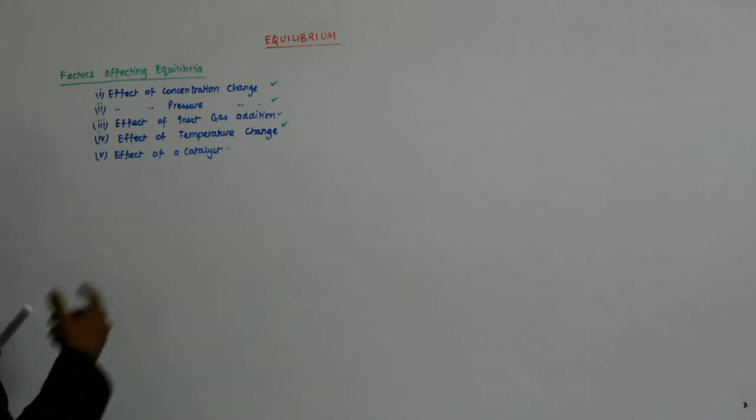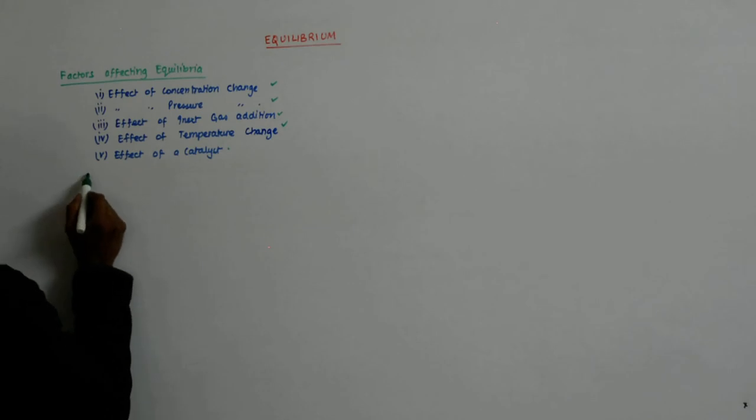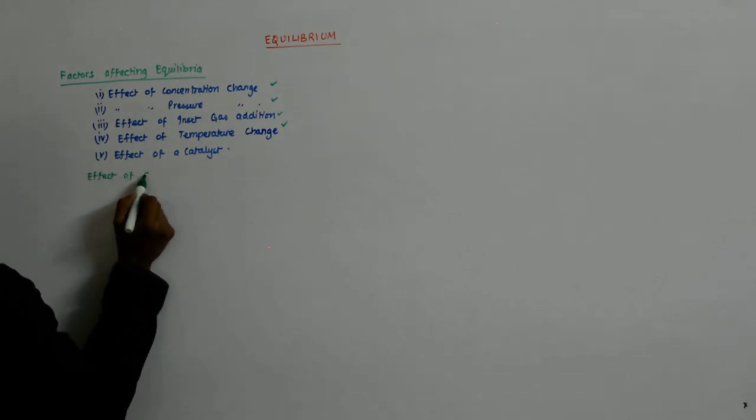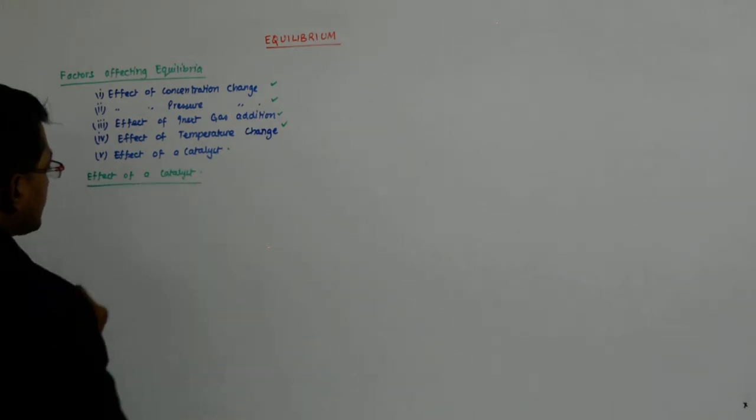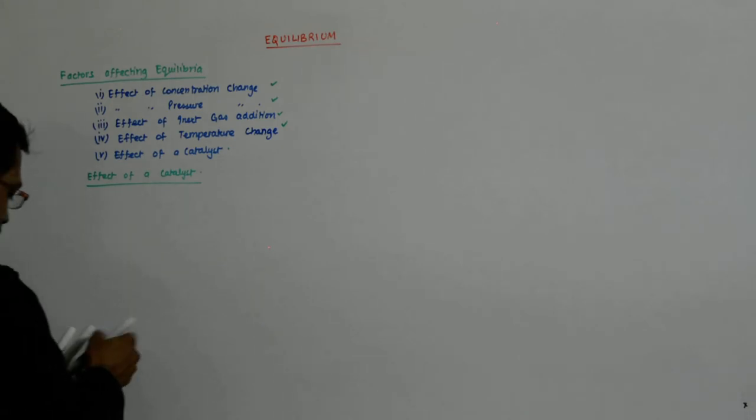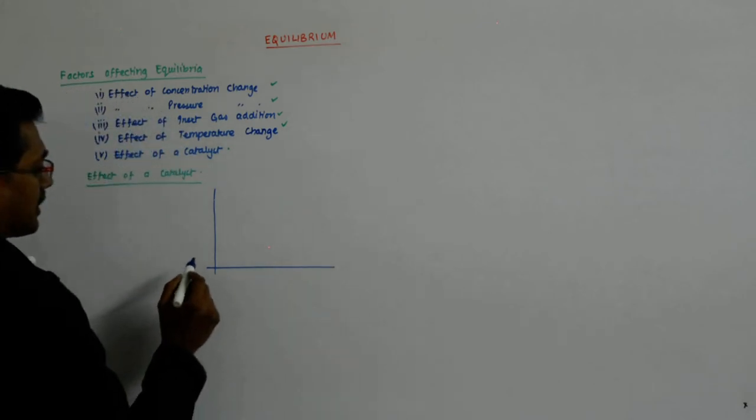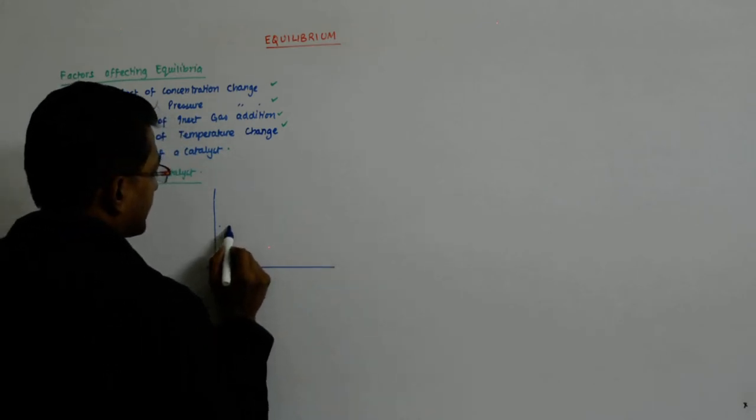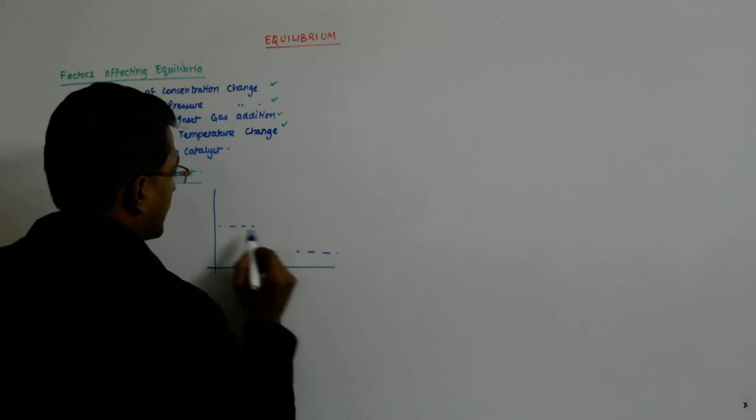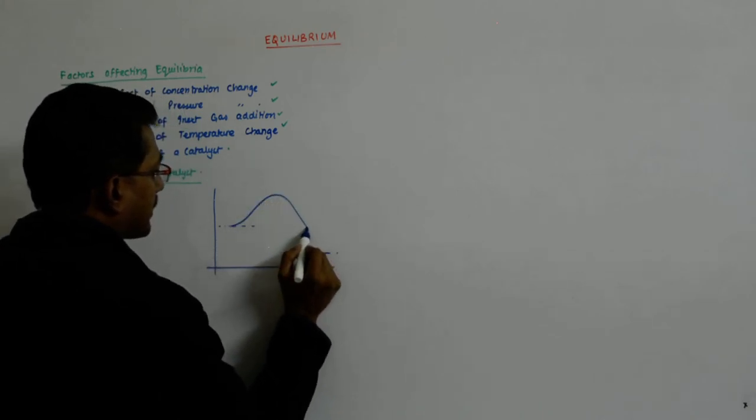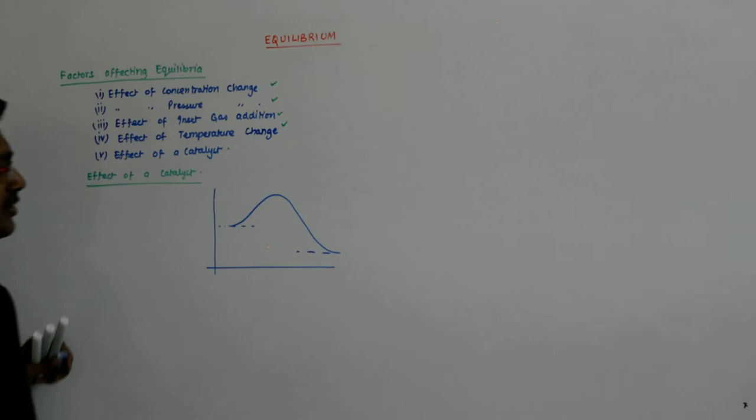Now, I don't know if it is there in your syllabus but let me give you a light hint about it. What happens? The normal energy path through which a reaction goes is, say this is a reactant and this is a product, then this is how suppose a reaction goes.